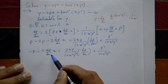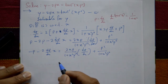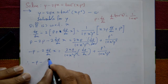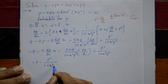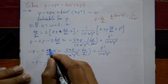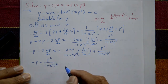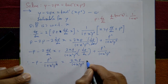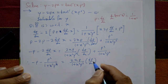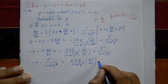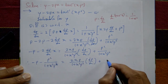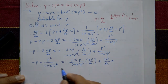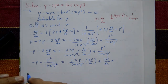Now shift terms: take all dp/dx terms to one side. Therefore on the left: minus p minus p squared upon 1 plus x squared p raised to 4. On the right: 2xp upon 1 plus x squared p raised to 4 into dp/dx, plus 2 dp/dx into x.